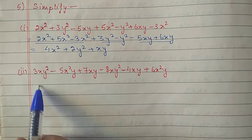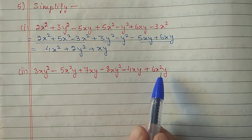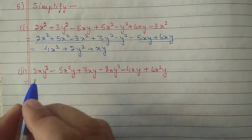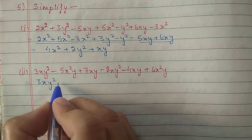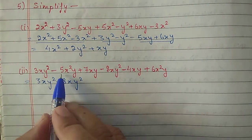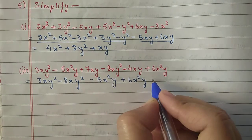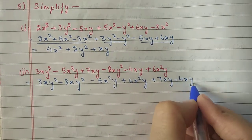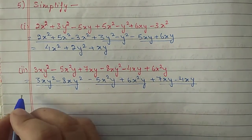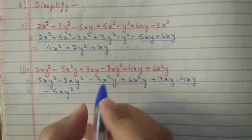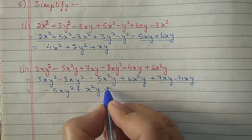Second part: 3xy square minus 5x square y plus 7xy minus 8xy square minus 4xy plus 6x square y. Taking like terms: 3xy square and minus 8xy square; minus 5x square y and plus 6x square y; 7xy and minus 4xy. Simplifying: 3 minus 8 is minus 5xy square; minus 5 plus 6 is 1x square y; 7 minus 4 is 3xy. Answer: minus 5xy square plus x square y plus 3xy.